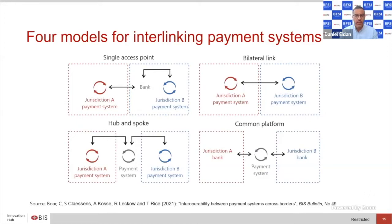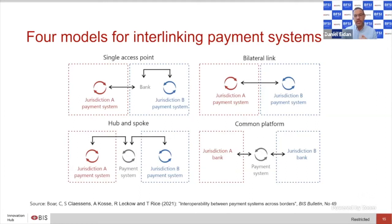I'd like to spend a couple of minutes explaining the models we have for interoperability, and then I'll build on these with examples of work we're doing at the Hub. There are four general models when thinking about integrating and interlinking payment systems on the horizontal interoperability model. A single access point is where a payment system in jurisdiction A connects through an access point — in this example, a bank — into jurisdiction B's payment system.